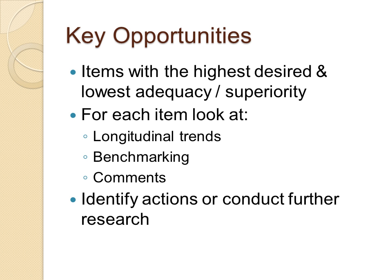I've spoken a bit about our key opportunities for improvement, and this is actually how I tend to break down my analysis these days. I start with looking at our items with the highest desired and lowest adequacy or superiority scores, and I scatter graph these out using the scatter graph templates available on the LibQUAL website. We focus particularly on those which have the highest desired and lowest adequacy or superiority score as our key opportunities for improvement. Normally, we identify about four or five items each year that are the ones we're going to focus on to try and improve our satisfaction scores and customer perception.